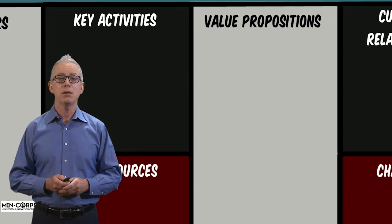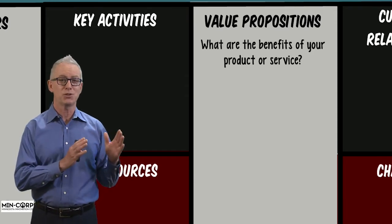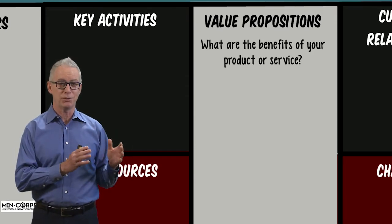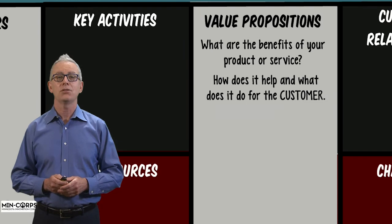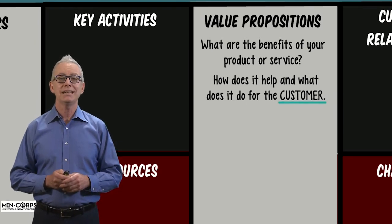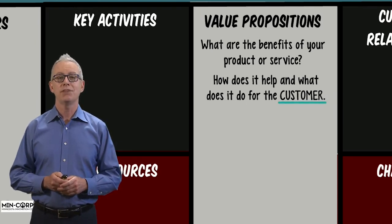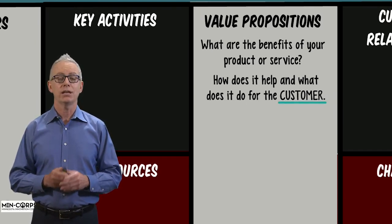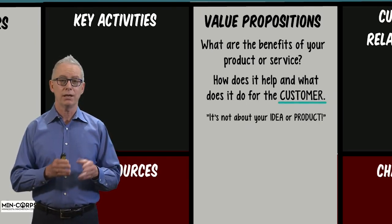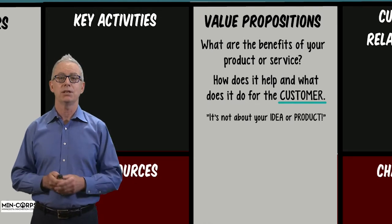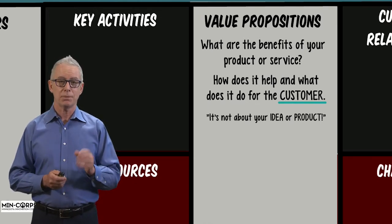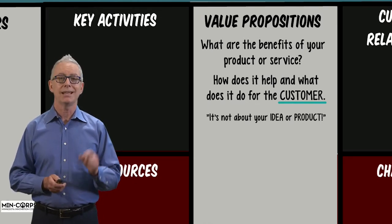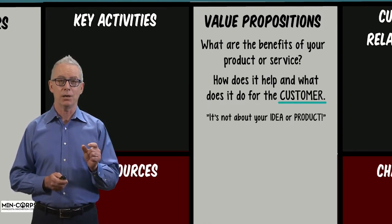We start in the center with the value proposition — building block one. This is not about the list of technical features of your product. This is all about the customer and the unique and differentiated value that you can quantify and demonstrate to your customer. So you start by articulating that value proposition.